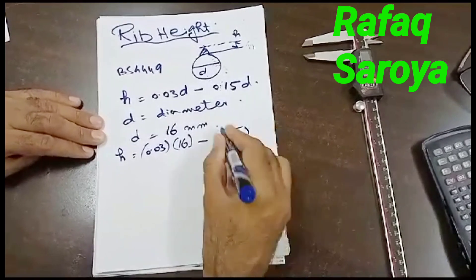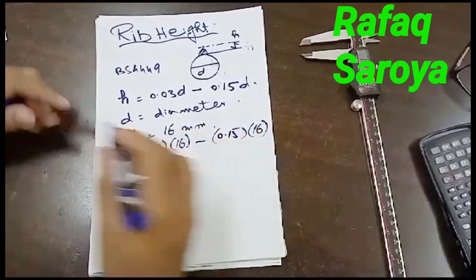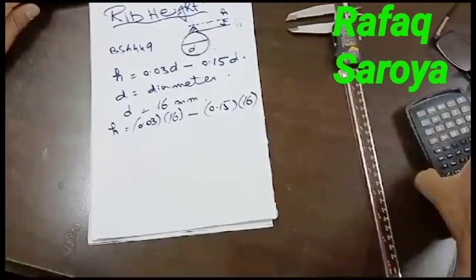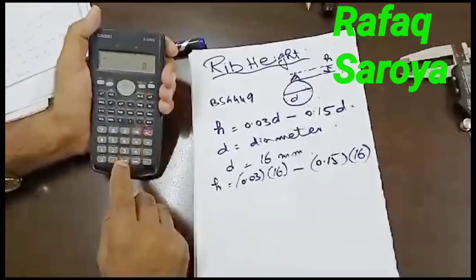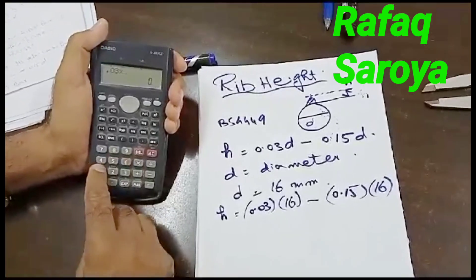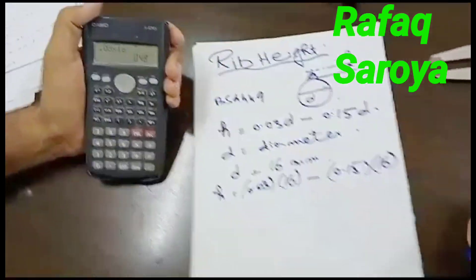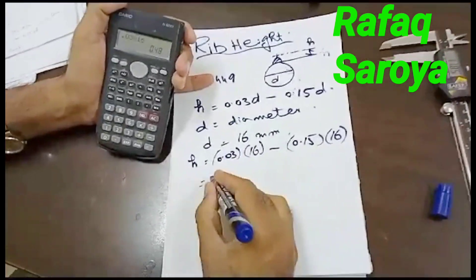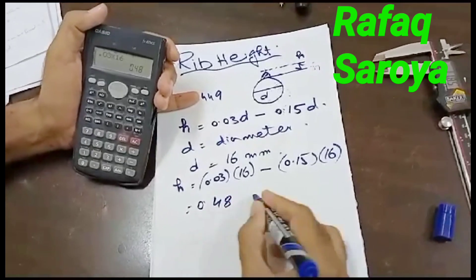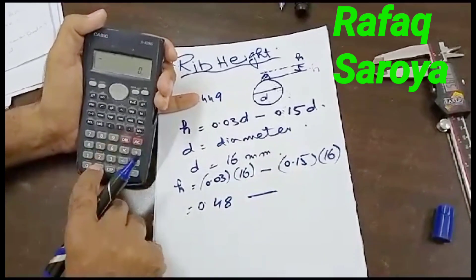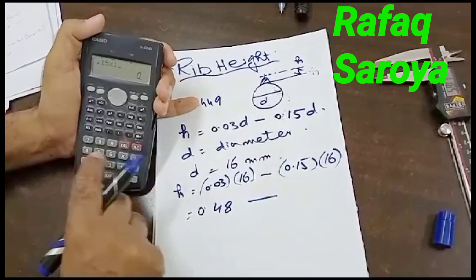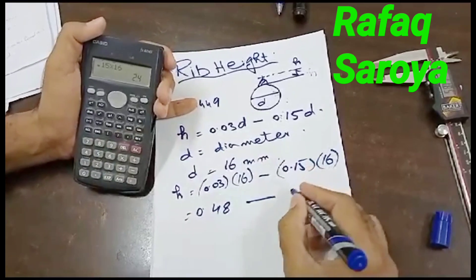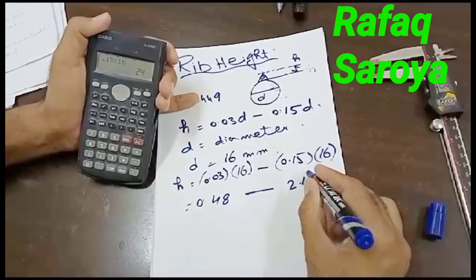0.03 times 16... So let me use the calculator: 0.03 times 16, its value comes out to be 0.48. 0.15 times 16, its value comes out to be 2.4mm.